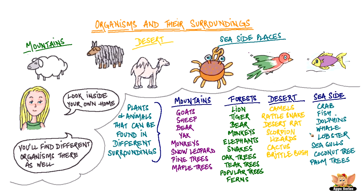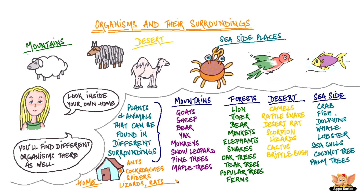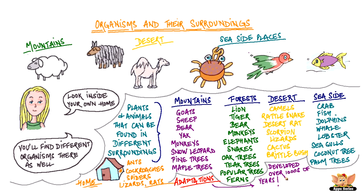Now look inside your home and you will find organisms there as well. Can you tell what organisms you find in your homes? We find ants, cockroaches, spiders, lizards, and rats. If you have a closer look at these organisms, you will find that they have their own special characteristics. These characteristics are adaptations that have developed over thousands of years and that help them to fit into their habitats.